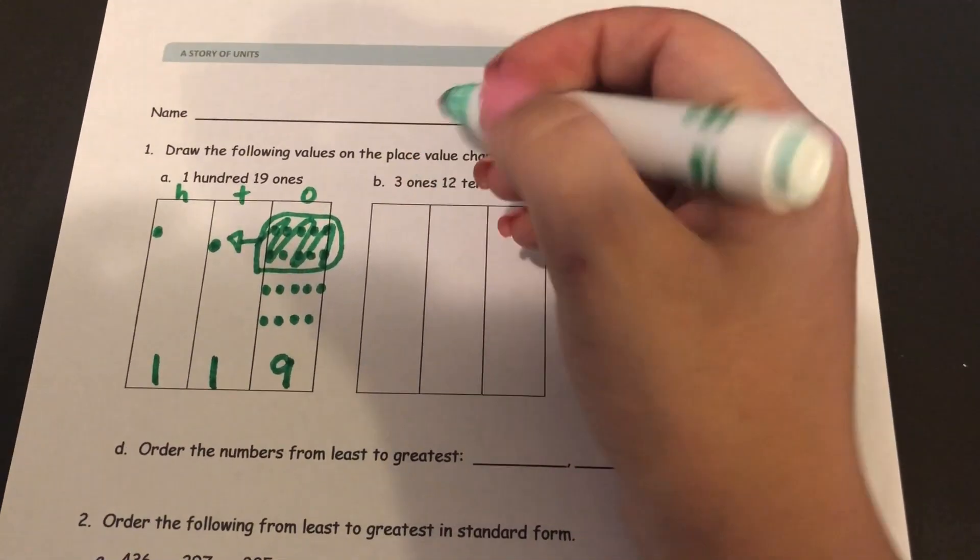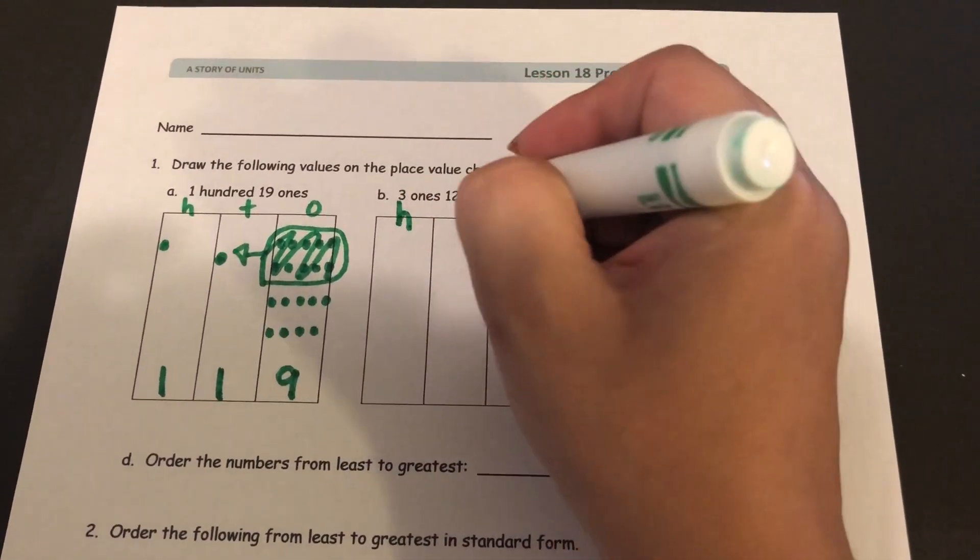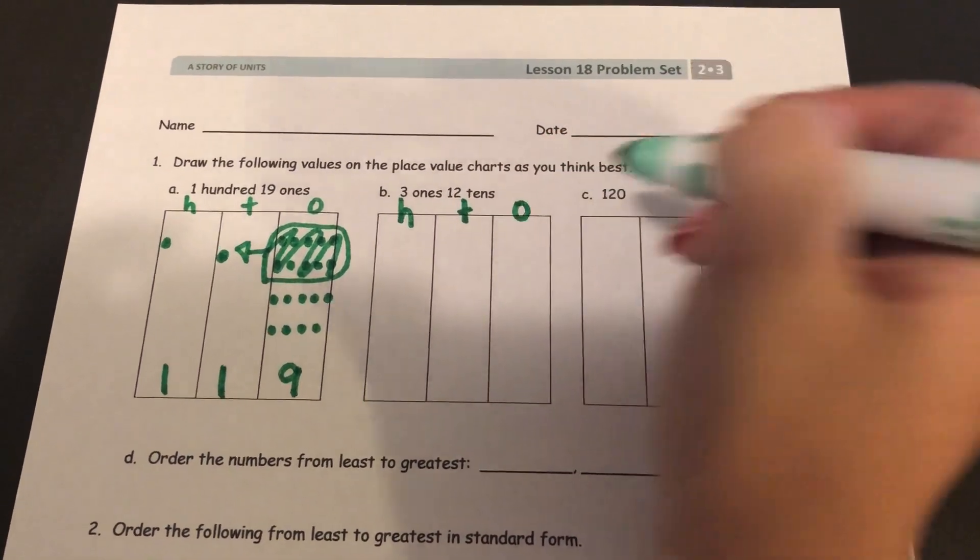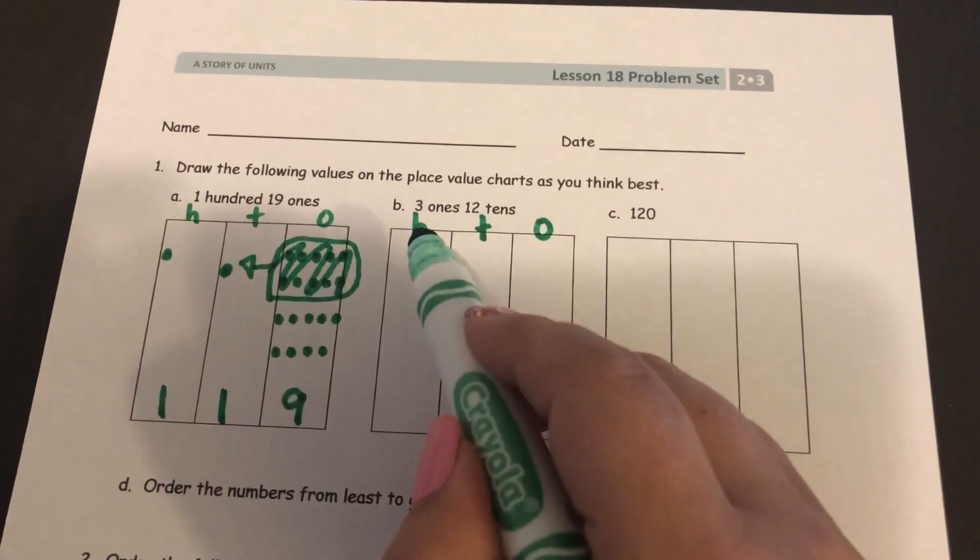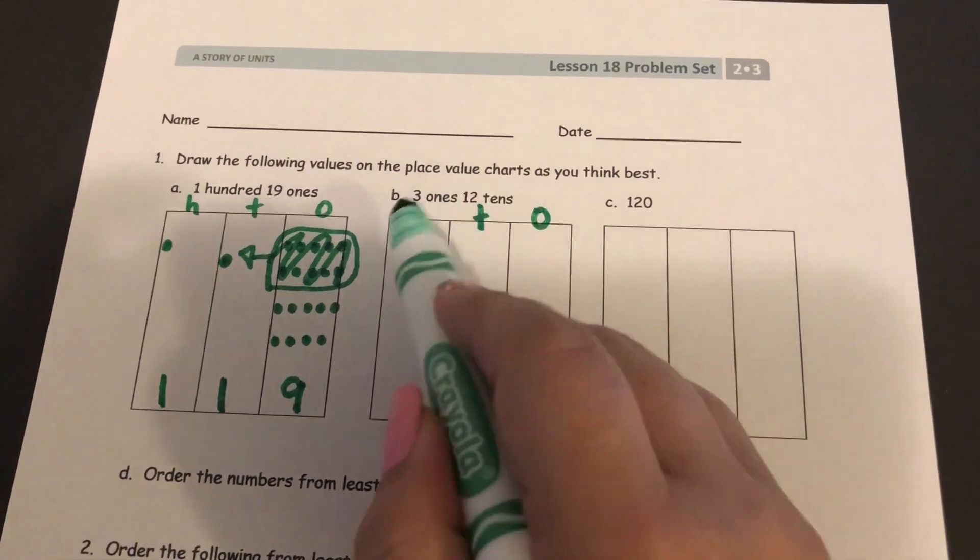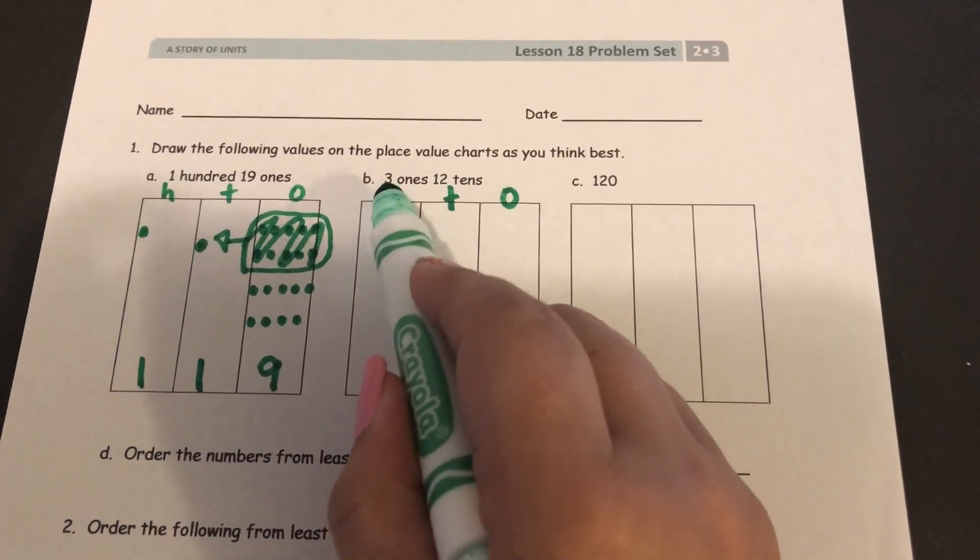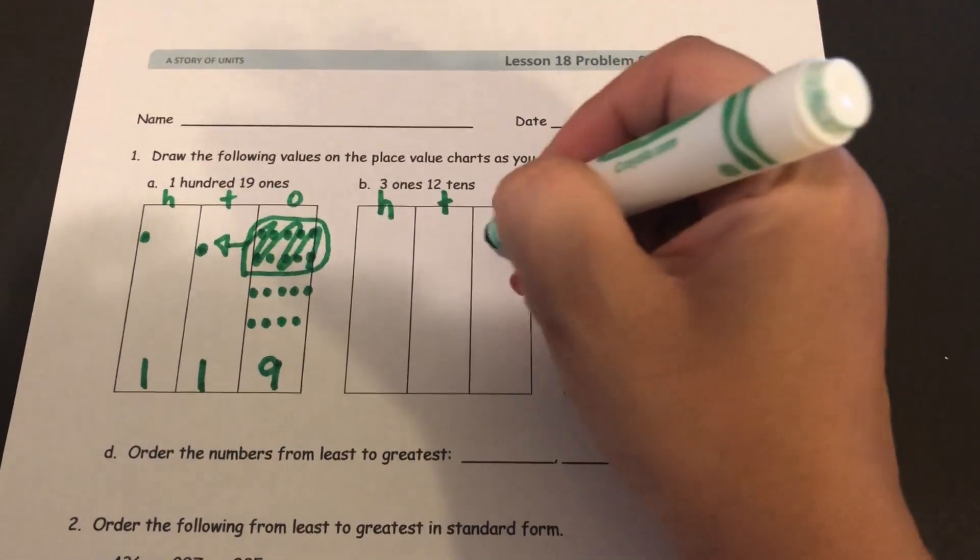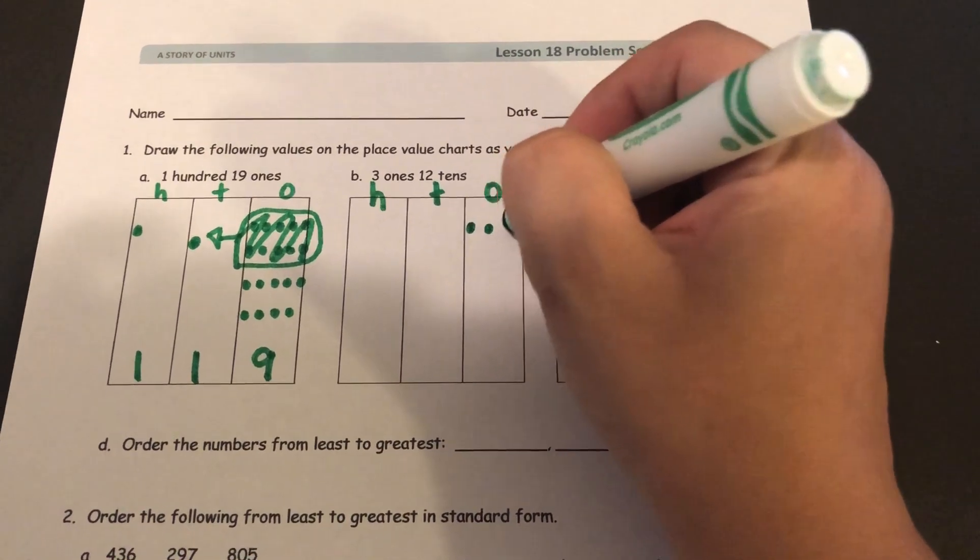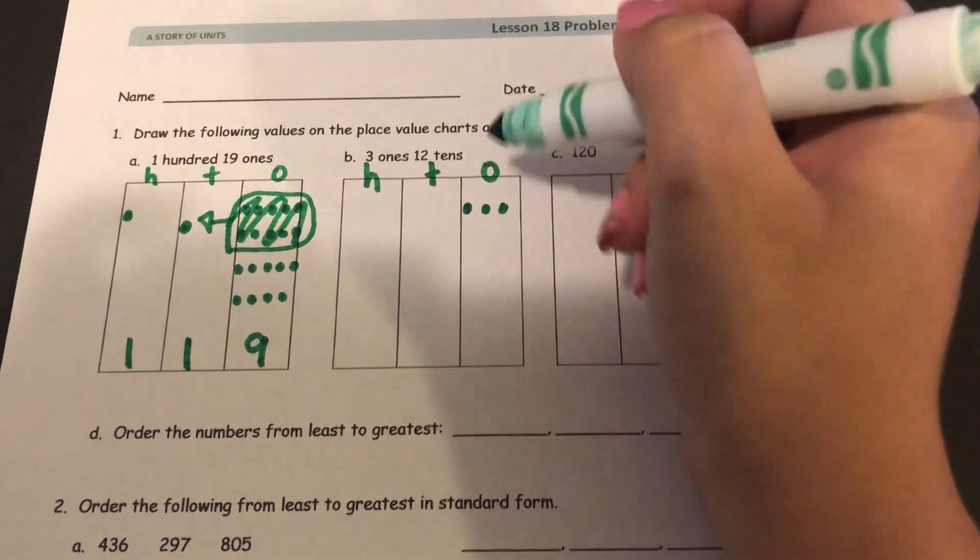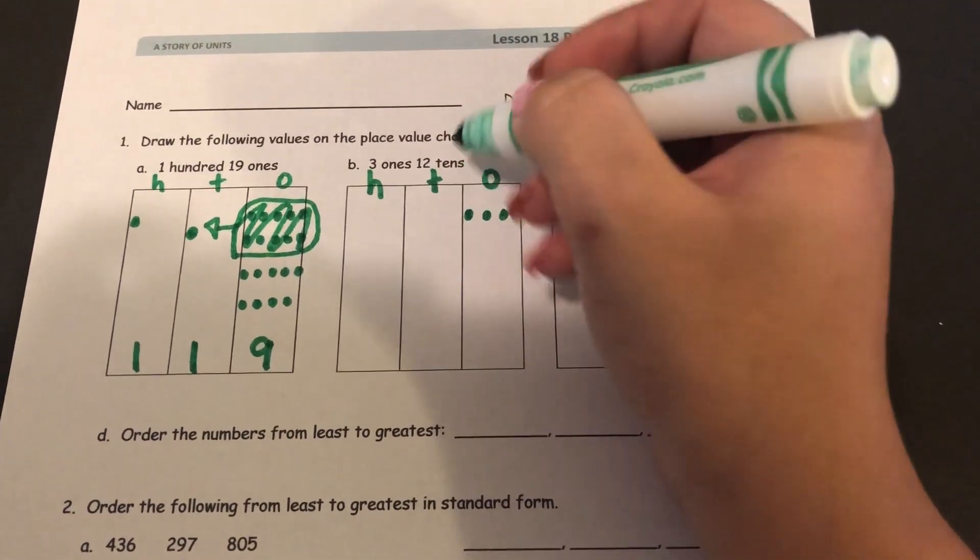Alright, the next one I'm going to label: hundreds, tens, ones. And it says there are three ones. Oh they put them in different orders. They tried to trick you. Three ones. So make sure you put three ones in the ones place. And 12 tens. Make sure they go in the tens place.